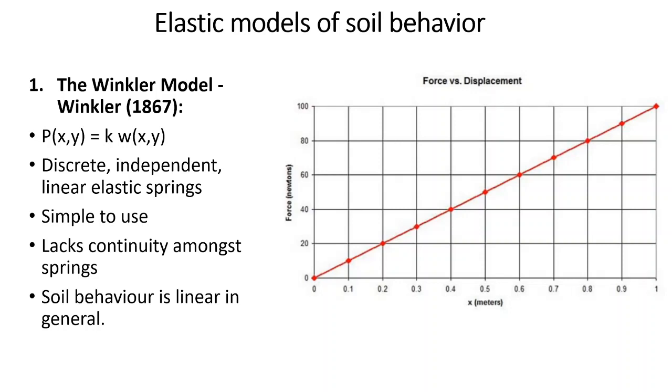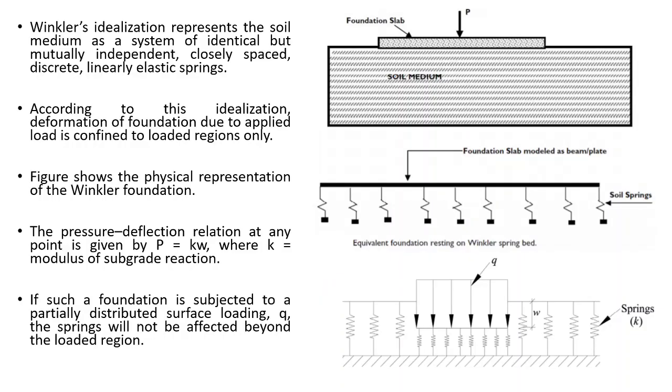The first model is the Winkler model, and it has been given in 1867. According to Winkler, he represents the soil medium as a system of identical but mutually independent, closely spaced, discrete, linearly elastic springs. For example, if this is your foundation slab and load P is applied on it, and it is the soil medium.